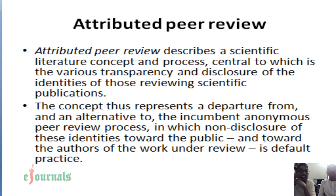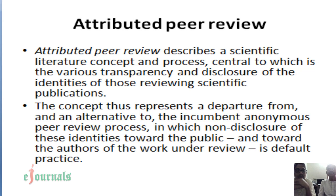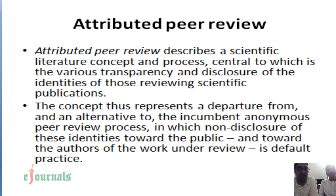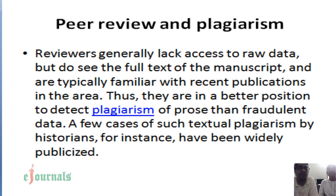The next type is called attributed peer review, mostly related to scientific literature. This involves transparency and disclosure of the identities of those reviewing a scientific publication. It is a departure from and alternative to anonymous peer review, in which there is non-disclosure of identities towards the public and towards the authors of the work under review. By default, the author should not know who the reviewer is, and the reviewer should not know who the author is, so that people can objectively conduct the review process without being influenced by emotions.